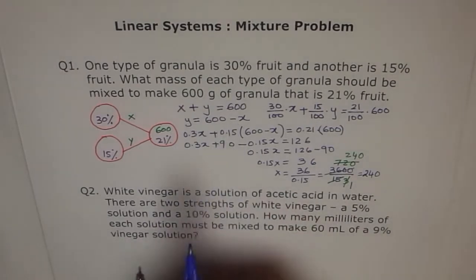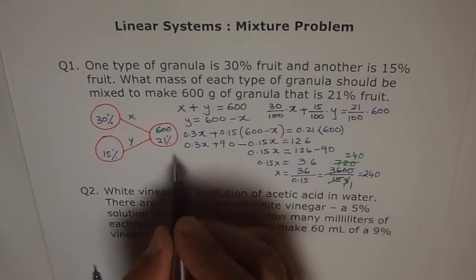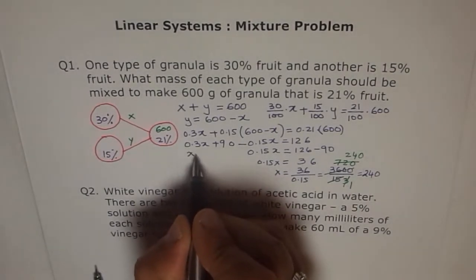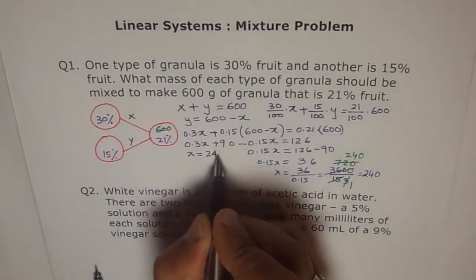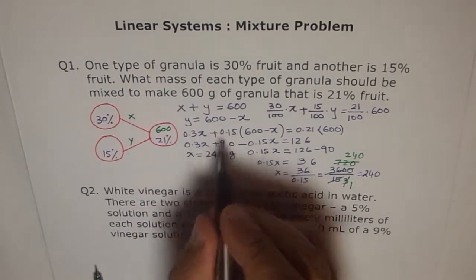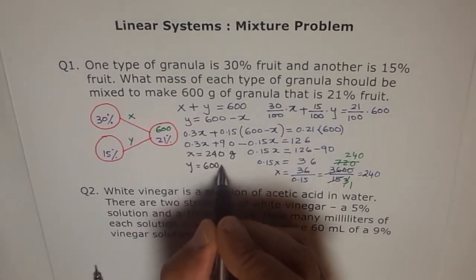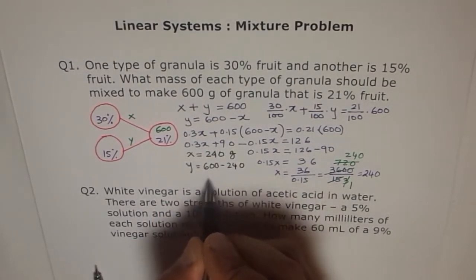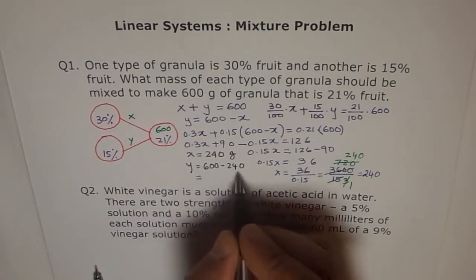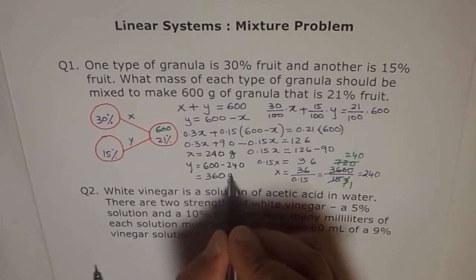And here, what were we writing about y? y is equal to... Now let us substitute. I am using a different color so that we do not mess it up. So we got x equals 240, and the unit is grams because 600 was in grams. And y is how much? y is equal to 600 minus 240. That should be 360 grams.